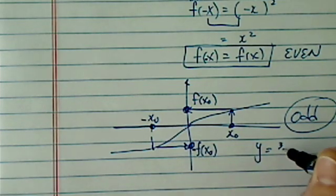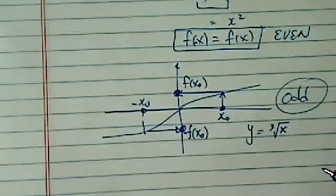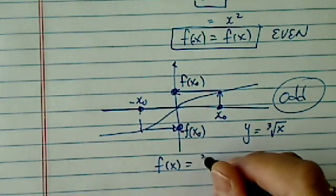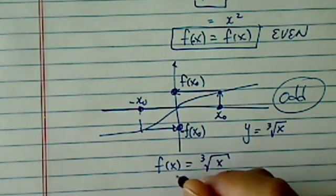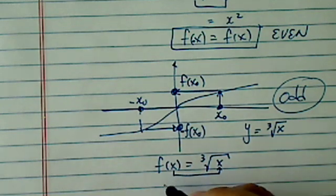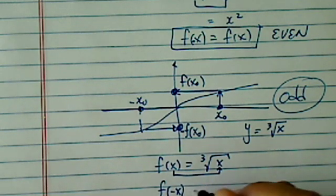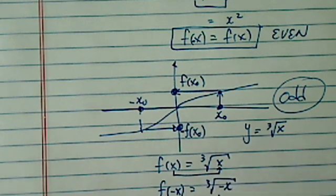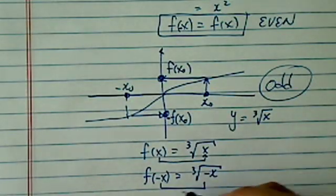y is equal to cubic root of x. So, for this one, f of x says, whatever you give me, I'm going to cube root. So, you give me x, I'll cube root it. If you give me f of minus x, whatever you give me, I'm going to cube root it. And that becomes that.